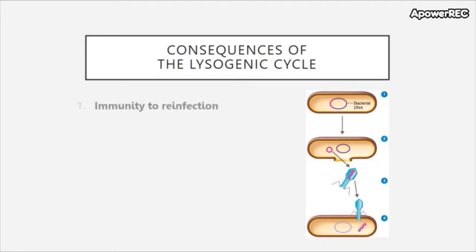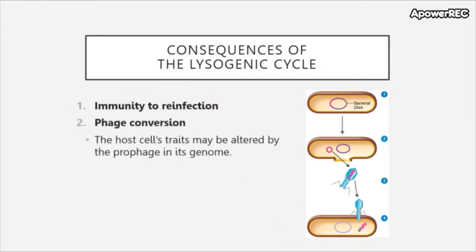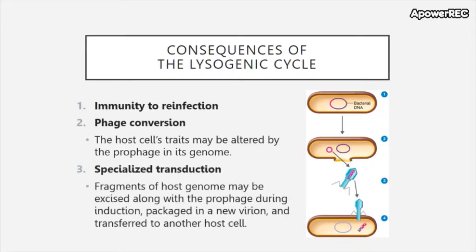The consequences of the lysogenic cycle can include immunity to reinfection. We can also have phage conversion, where the host cell's traits may be altered by the prophage in its genome — just as having different genes changes an organism's phenotype, viral genes in bacterial DNA can affect its phenotype. Lastly, we can have specialized transduction, where fragments of a host genome may be excised along with the prophage during induction, packaged into the new virion, and transferred into a new bacterium upon reinfection.